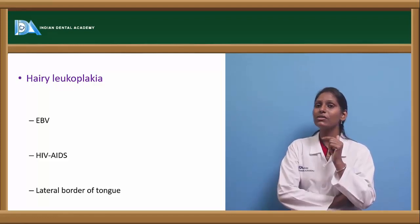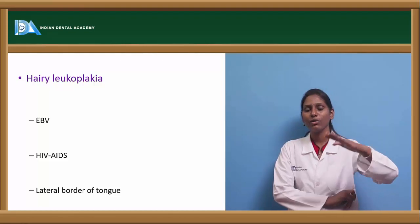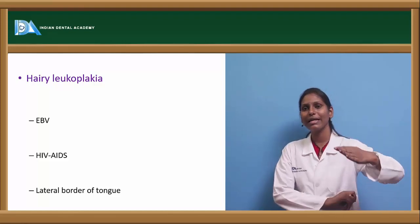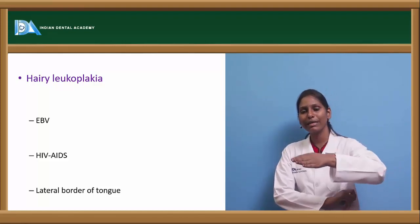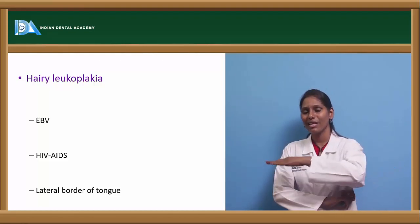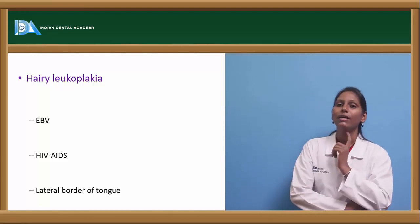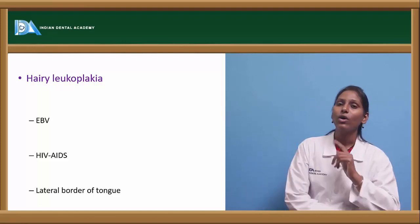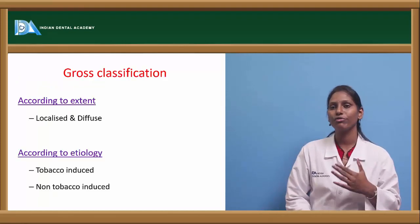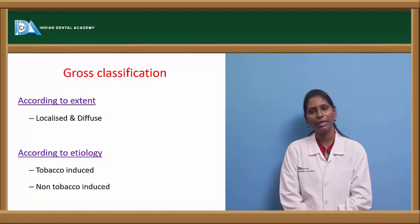If hairy leukoplakia occurs on the floor of the mouth, we can see an ebbing tide pattern — the pattern that waves make on sand — a nice ebbing tide pattern can be seen if it occurs on the floor of the mouth. This is about hairy leukoplakia.